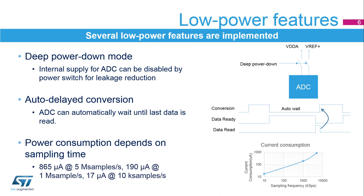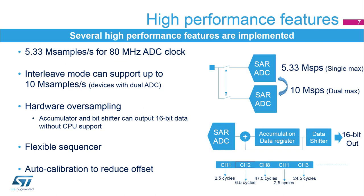The power consumption is a function of the sampling frequency. For low sampling rates, the current consumption is reduced almost proportionally. The ADC supports up to 5.33 megasamples per second of conversion. By using dual interleaved mode, it can be extended to 10 megasamples per second.